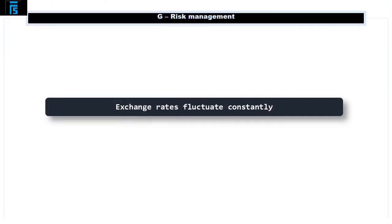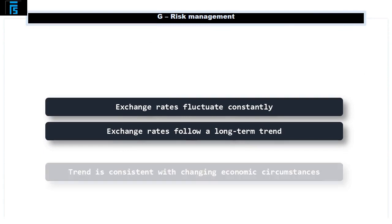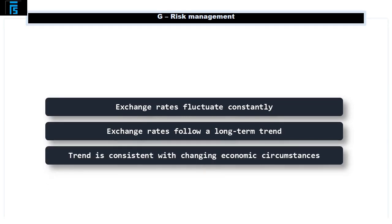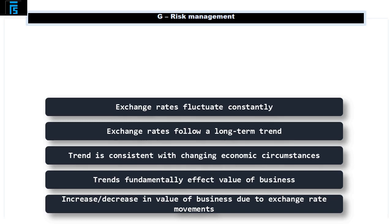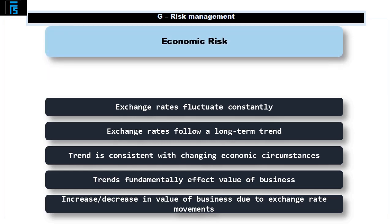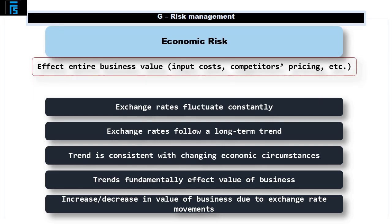Although exchange rates fluctuate constantly, they often follow a long-term trend consistent with the changing economic circumstances of the two countries in question. These long-term trends can fundamentally affect the value of our business. For example, if we constantly make sales to the UK from America, the value of each individual sale will go up or down depending on the direction of exchange rate movement. Over time, there may be a long-term trend which means the value of the business gradually increases or decreases. This is known as economic risk. We may face economic risk even if we don't sell overseas, as it may affect our input costs or our competitors' pricing.